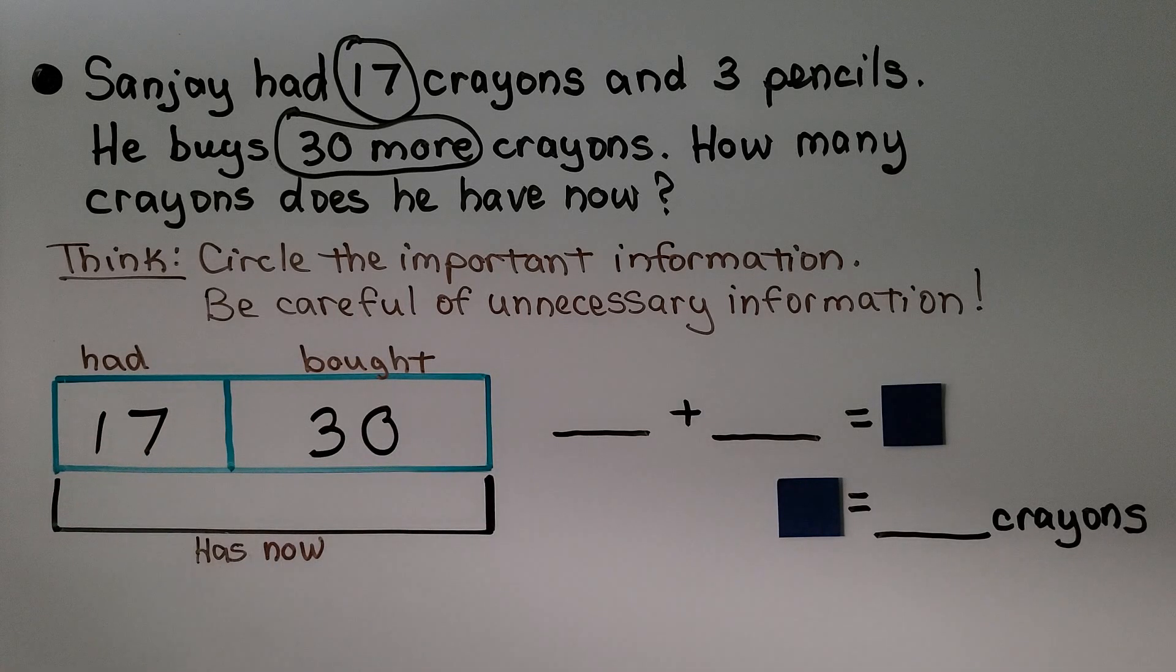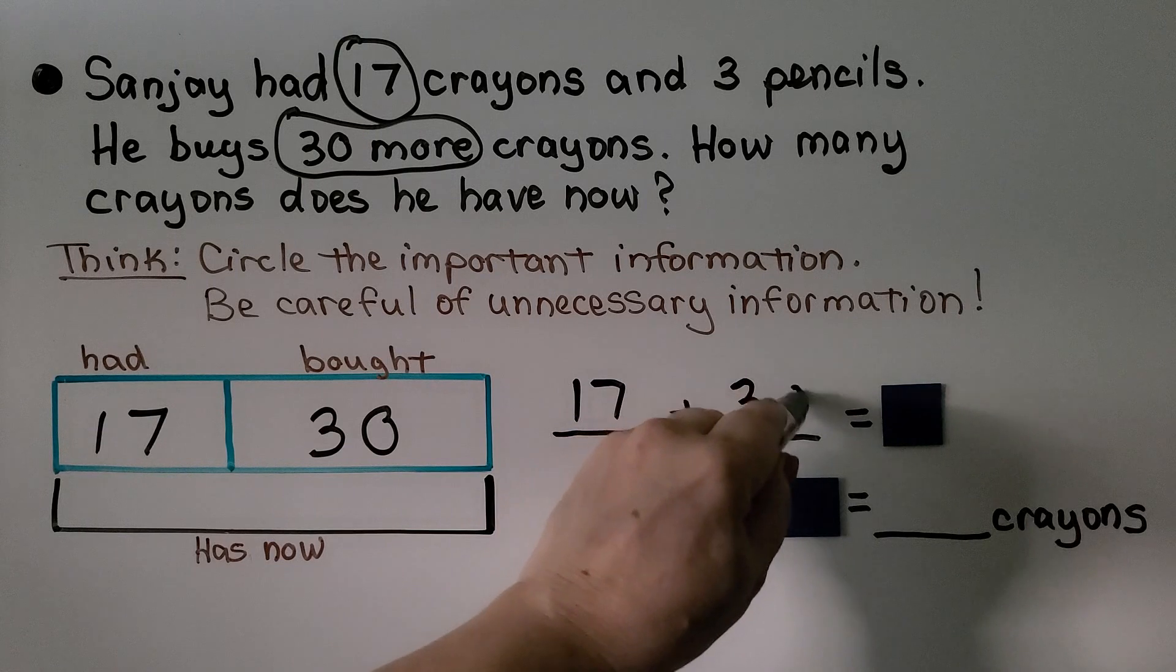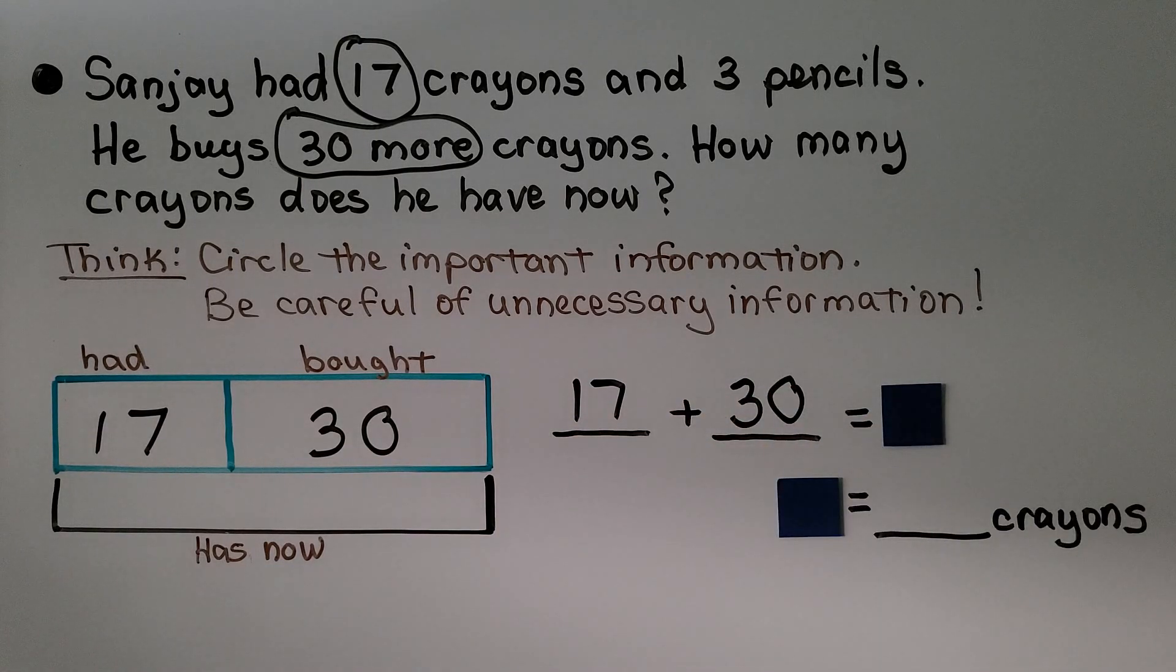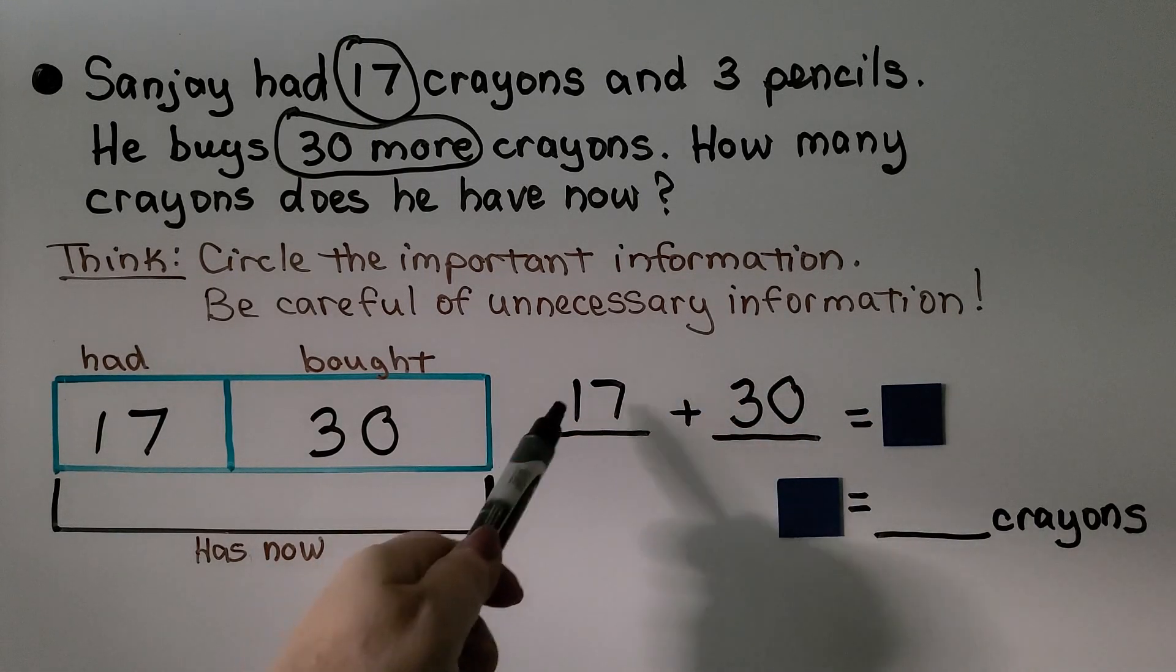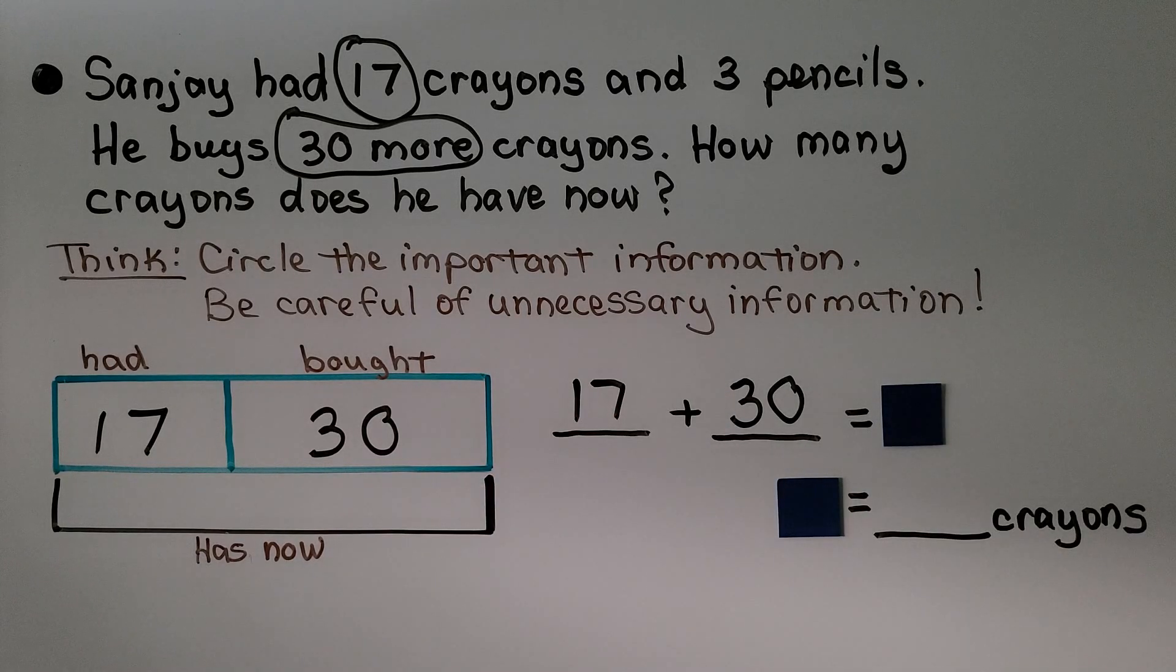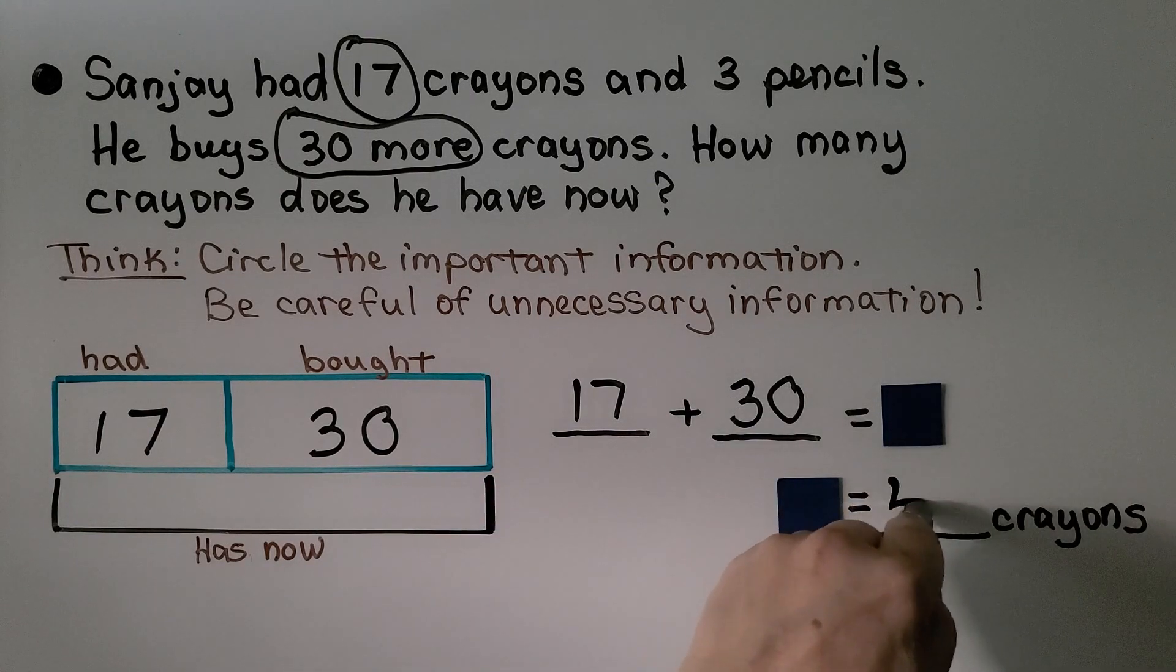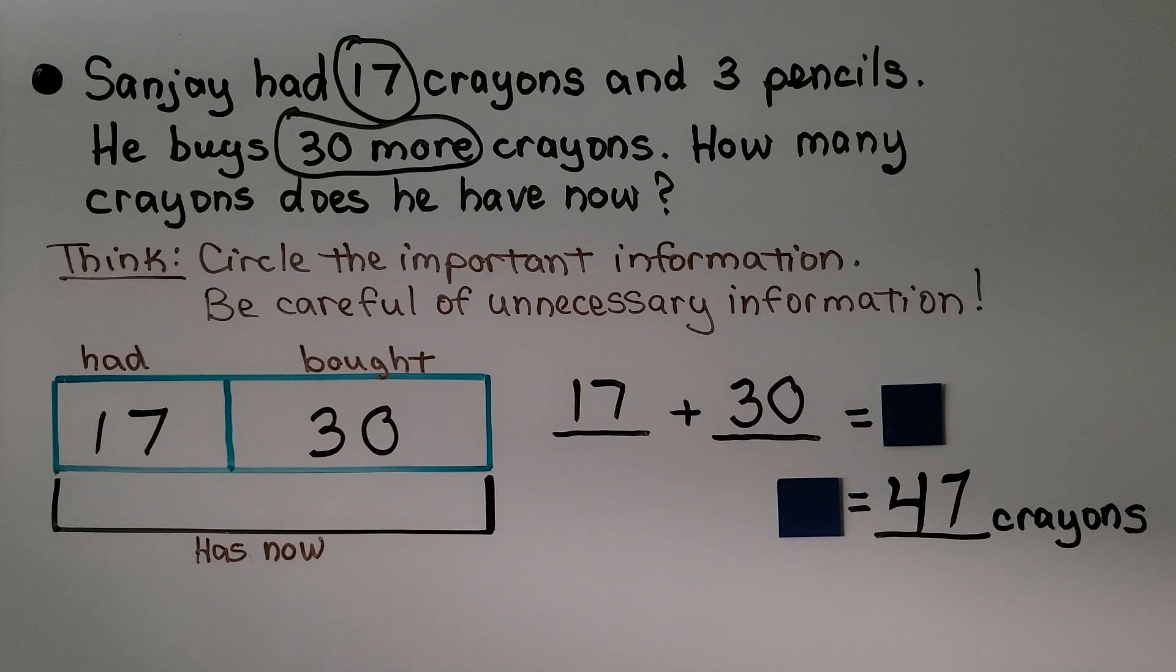So how many does he have now? We can write a number sentence, an equation. 17 plus 30 is equal to some number. We have 17 and we're just adding 3 tens to it. We could do this with mental math. 1 ten and 3 tens is 4 tens. We still have the 7 ones. That means he's got 47 crayons. And the little square is equal to 47.